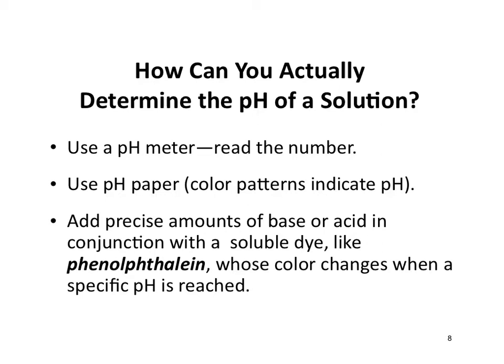How will we actually measure pH? We're lucky to have digital pH meters that we can hook up to a computer, and the meter will give us the pH value. We'll also use pH paper — based on the color of the paper after dipping it into a substance, we can measure the pH at least qualitatively. It's not as quantitative as the pH meter, but it gives an indication of the relative pH value.